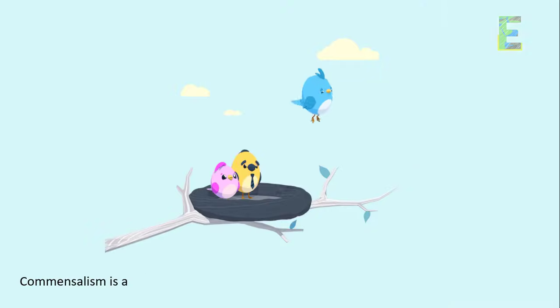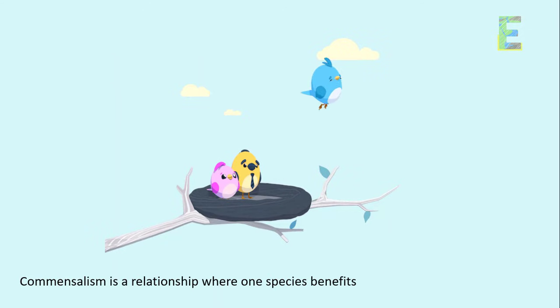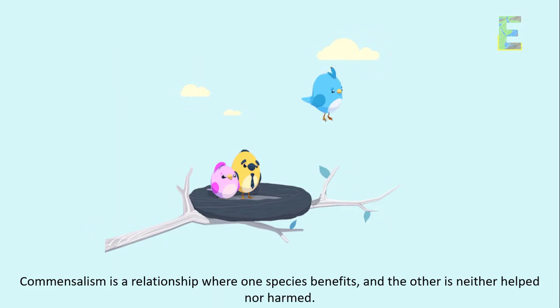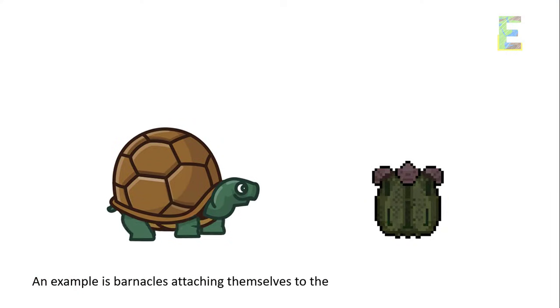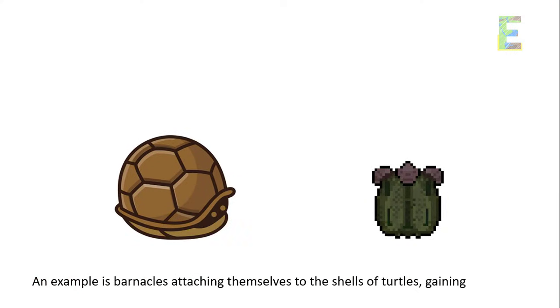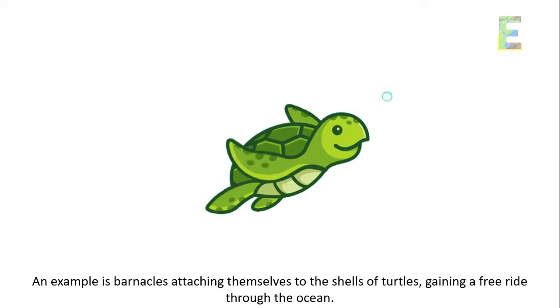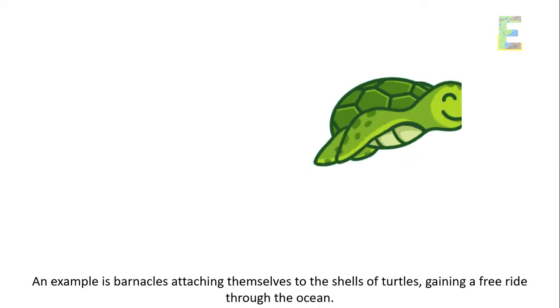Commensalism is a relationship where one species benefits and the other is neither helped nor harmed. An example is barnacles attaching themselves to the shells of turtles, gaining a free ride through the ocean.